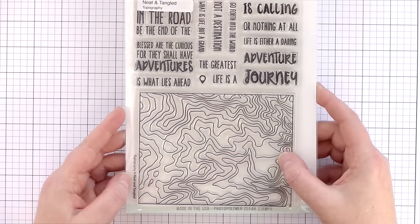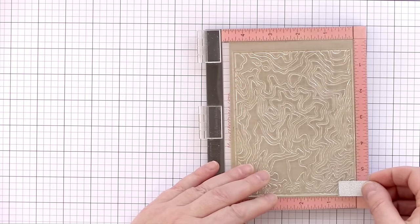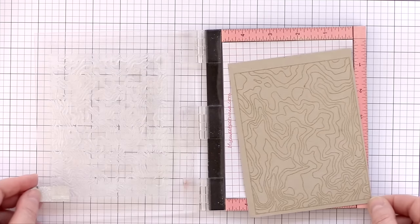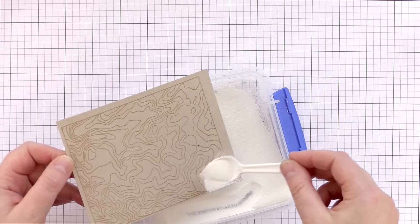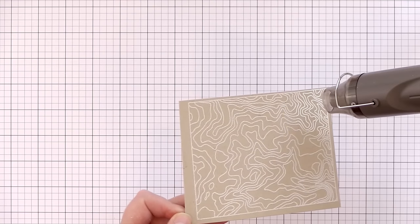I don't think I've seen a set like the Topography set before with its lovely contour lines. I've applied a powder tool to a piece of Nina Desert Storm card and then stamped the image in clear embossing ink. I think the tone-on-tone look looks great at this point, but you could equally white heat emboss to get a different look too.